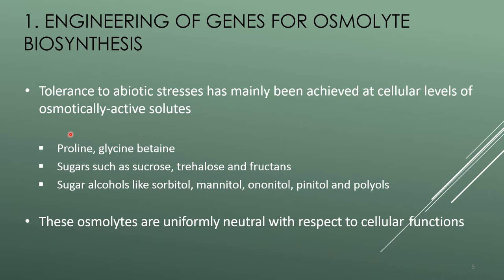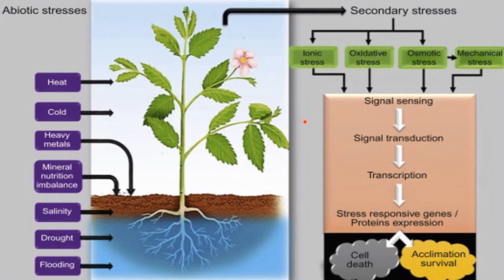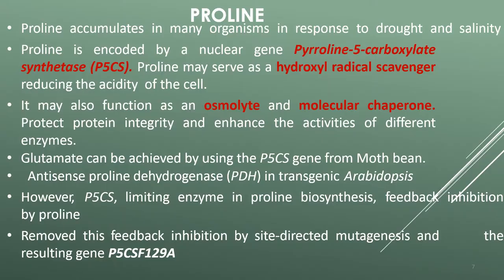Tolerance to abiotic stress has mainly been achieved at the cellular level using osmotically active solids like proline, glycine betaine, sugars such as sucrose, trehalose and fructans, and sugar alcohols like sorbitol and mannitol. These osmolites are uniformly neutral with respect to cellular function. Accumulation of these molecules helps retain water within the cell, protects the cellular compartment from injury caused by dehydration, maintains turgor pressure during water stress, stabilizes the structure and function of certain macromolecules, and scavenges reactive oxygen species.